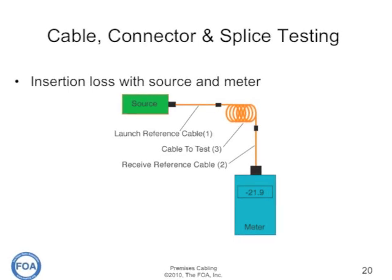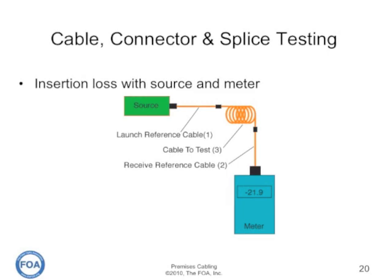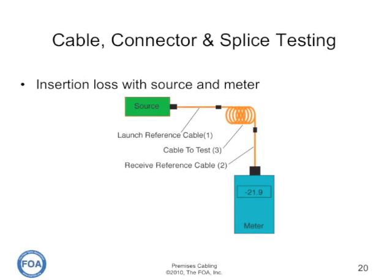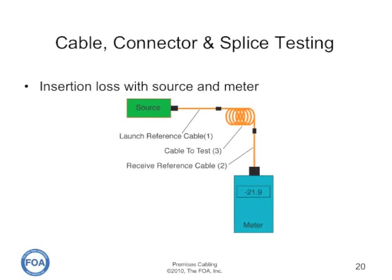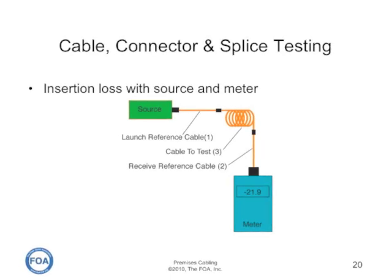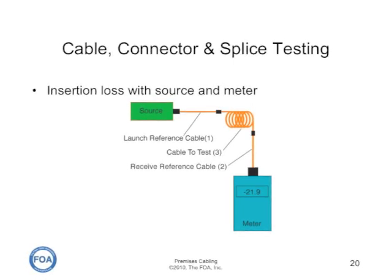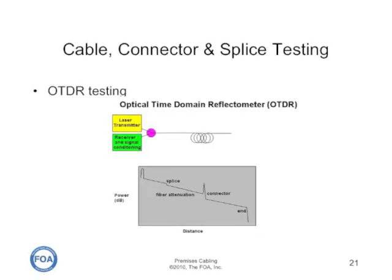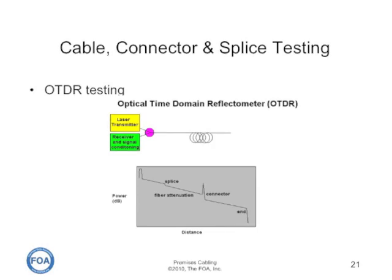Insertion loss testing uses a source that emulates the transmitter and a meter that works like the receiver detector. We use launch and receive cables because they allow us to mate to the cable plant under test and test the connectors on either end. This measurement gives us a loss value for the cable plant that is equivalent to what the actual transmission system will see when it's used on that cable plant. This is the test used for acceptance testing, and if the cable plant is long enough, optical time domain reflector testing can be used to look at the cable plant.